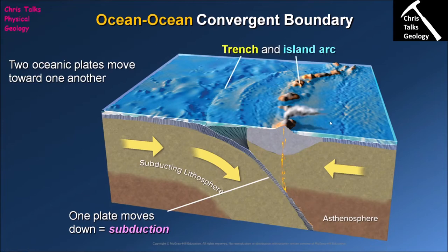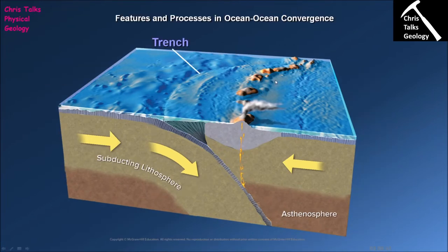In terms of surface features at ocean-ocean convergent plate boundaries, we have two main features: the formation of a trench and the formation of a volcanic island arc — a curved line of volcanic islands. The trench forms at the location where subduction is beginning, marking where the oceanic crust starts to be pushed down into the Earth's mantle.